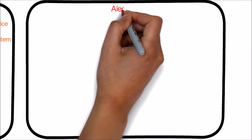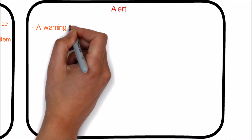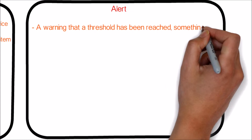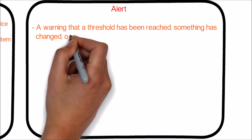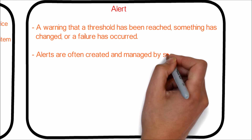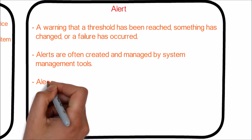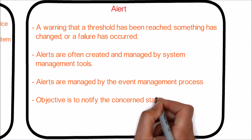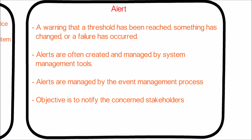Let's look at alert now. An alert is a warning that a threshold has been reached, something has changed, or a failure has occurred. Alerts are often created and managed by system management tools, and are managed by the event management process. The objective is to notify the concerned stakeholders.